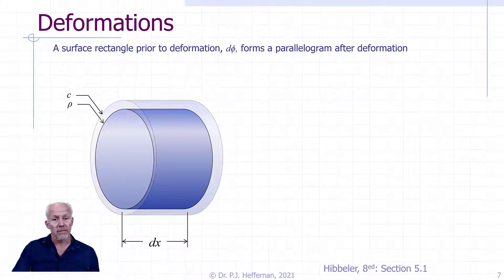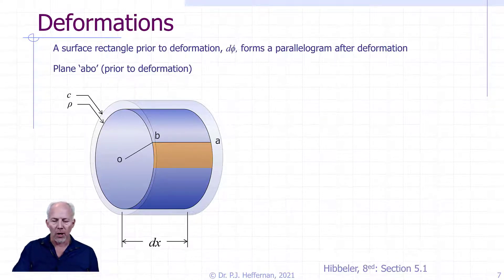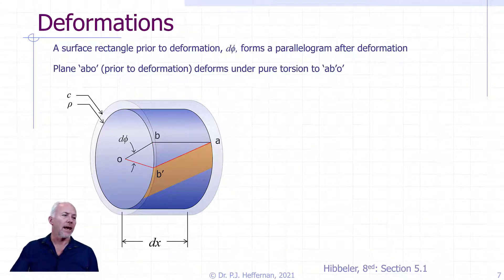Now, one of the things that we saw when we looked at that rubber bar early on was that a surface that was rectangular prior to deformation forms a parallelogram after deformation. So let's see if we can look at this more closely. We have the plane A, B, O, where O is the origin, or along the longitudinal axis. And A, B are on this surface, a distance rho from the longitudinal axis. And I've drawn in the plane, or that rectangle in brown to reflect that. And that is prior to the torque being applied. After the torque is applied, it will deform by our angle of twist. And that previously rectangular surface will now become a parallelogram.